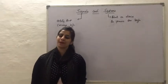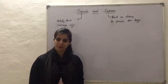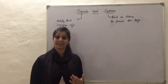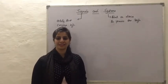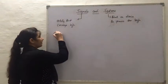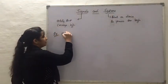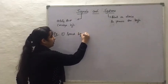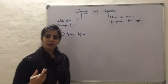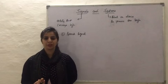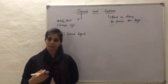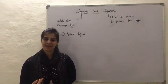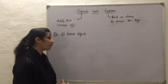I am able to communicate some information to you. That information is a signal and that signal is called a speech signal. So the first example we have is a speech signal. Now you are able to grasp some information through this video. The information that you are hearing is again a signal and that signal is called an audio signal.